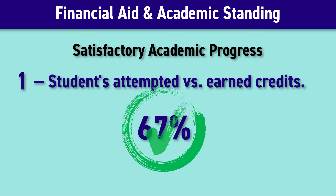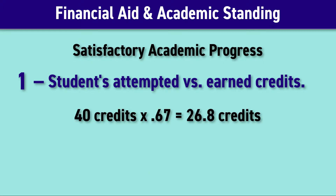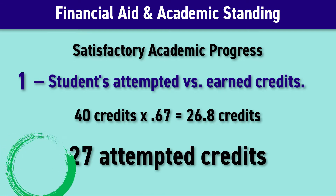Looking at this example, imagine a student who's taken 40 credits. 67% of 40 would be 26.8, so that student would have to have earned 27 credits to maintain financial aid.